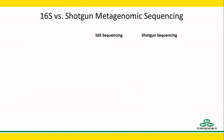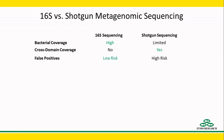Let's sum up the points we've gone over. 16S sequencing is able to identify more bacterial species from a wider range of sample sources. Shotgun sequencing is capable of identifying species from all three taxonomic domains. 16S is much less risky in terms of false positives.